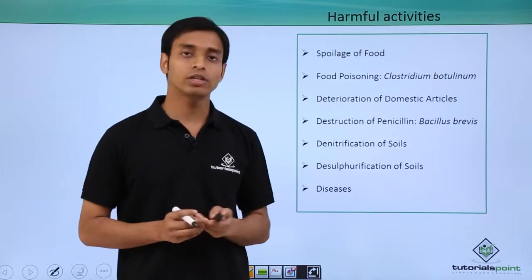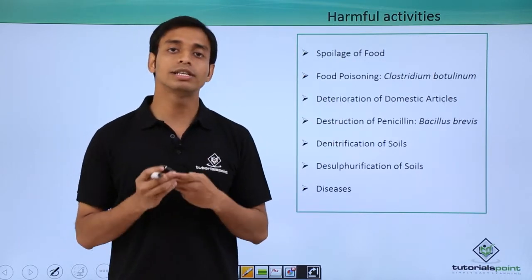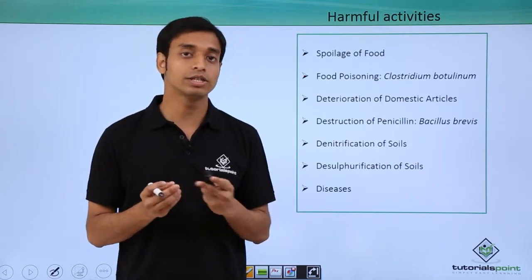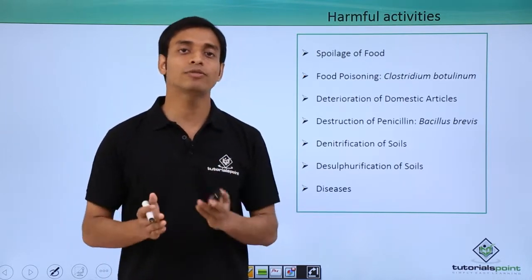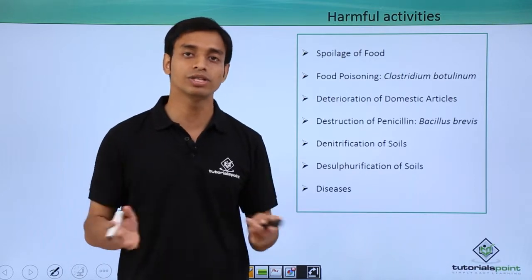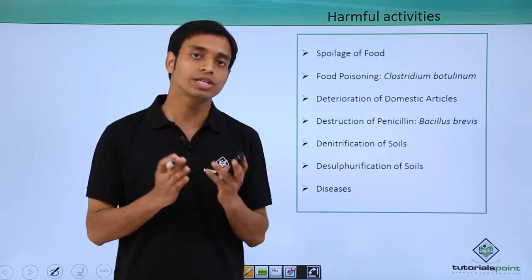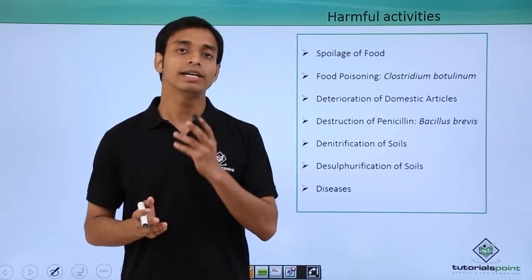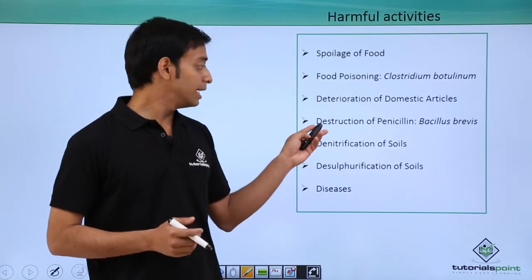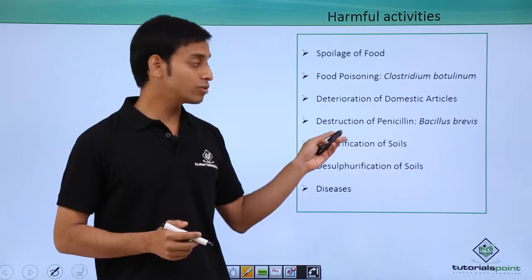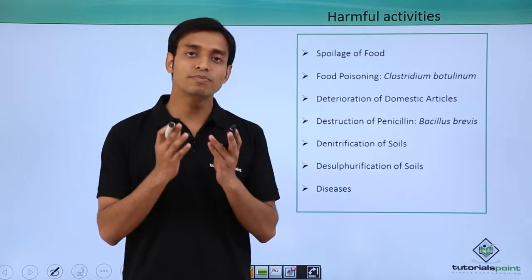Bacteria also cause deterioration of domestic articles. For example, they cause the deterioration of leather, fiber, and wood — the types of domestic articles which we use in our day-to-day life at home are damaged or destroyed by bacteria.